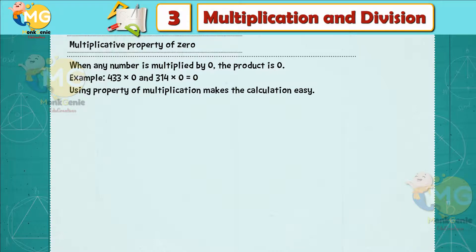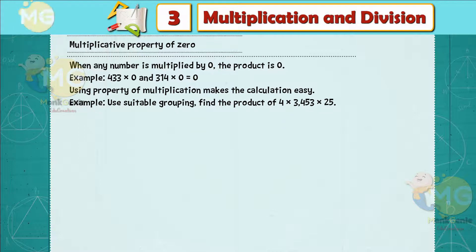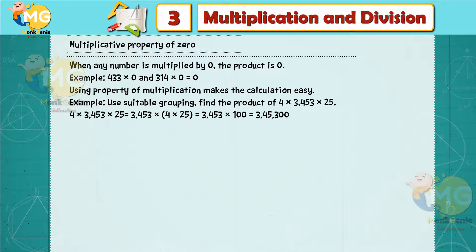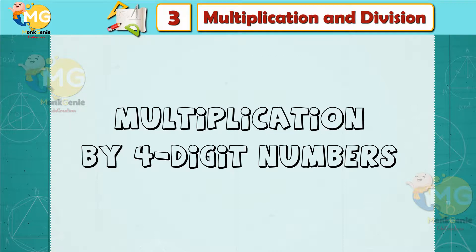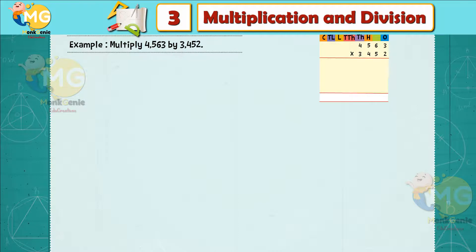Using properties of multiplication makes calculation easy. Example: use suitable grouping to find the product of 4 × 3,453 × 25. This equals 3,453 × 4 × 25 = 3,453 × 100 = 3,45,300. Thus the product is 3,45,300.